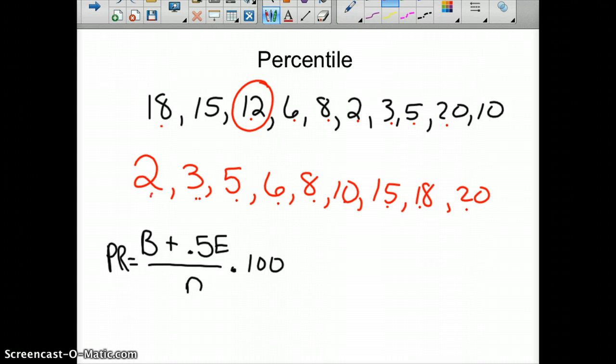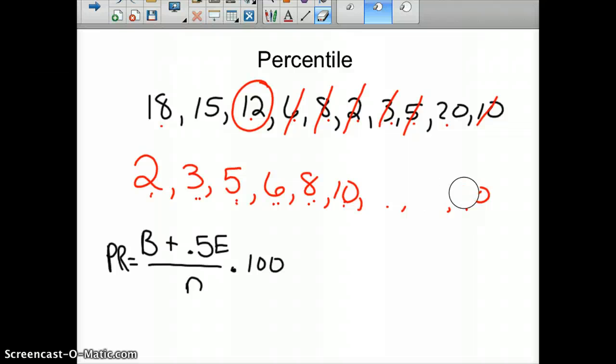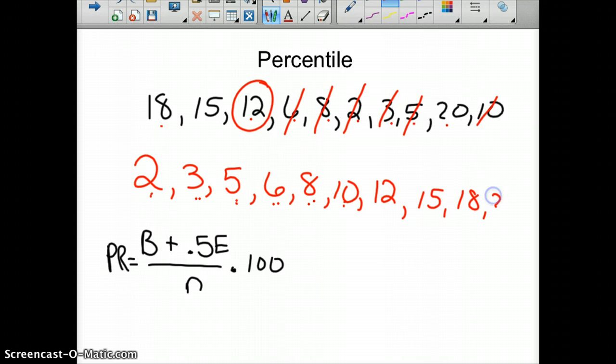So 2, 3, 5, 6, 8. The one I circled, I missed. So we'll stick 12 in there. So 12, 15, 18, 20. Now we're good to go. So we have them all.